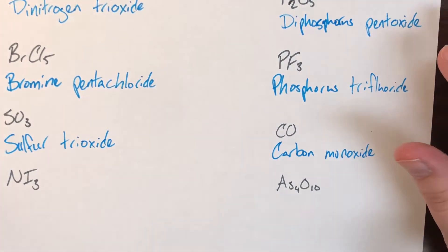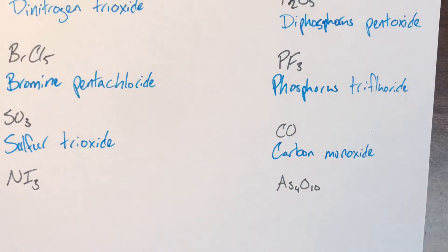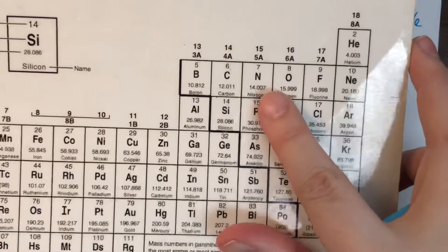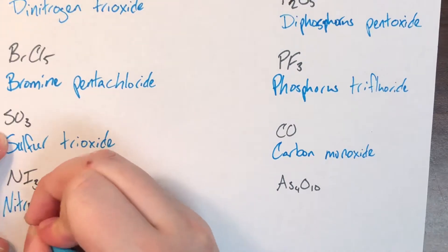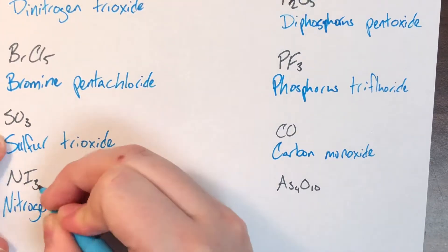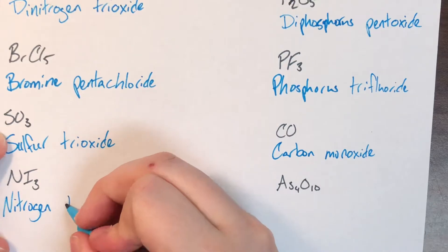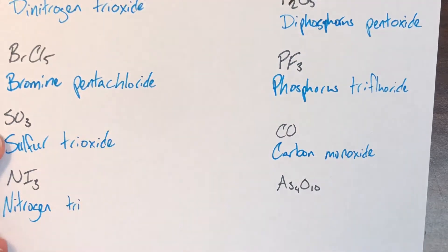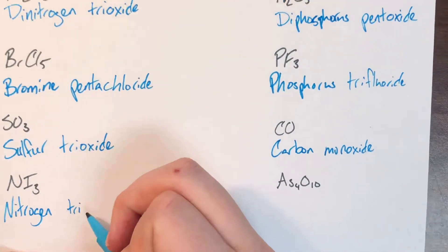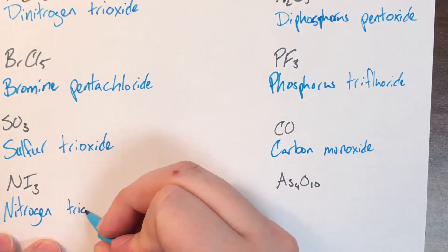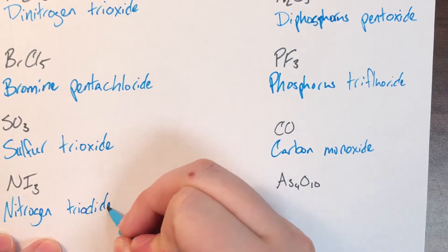Next is NI3. N doesn't have a subscript, so no prefix — N is nitrogen. The subscript of 3 gives the prefix tri. I is iodine, whose compound name is iodide. There's no double I, so it's just triiodide. The name is nitrogen triiodide.